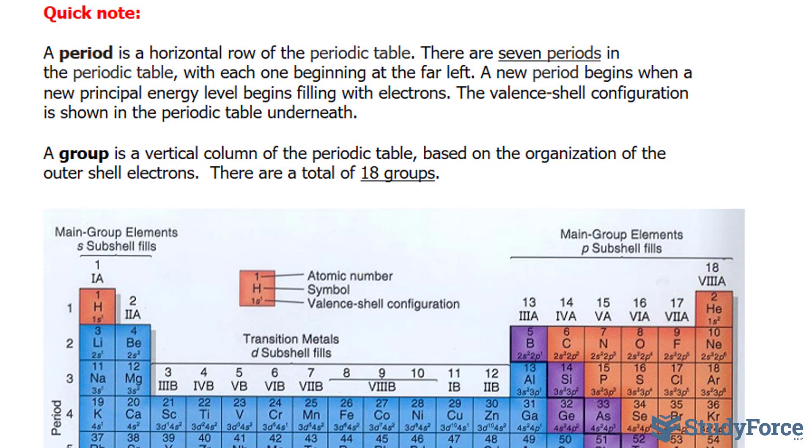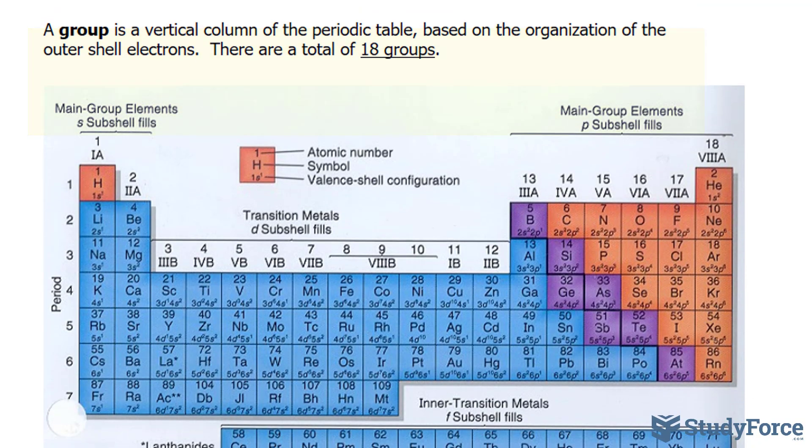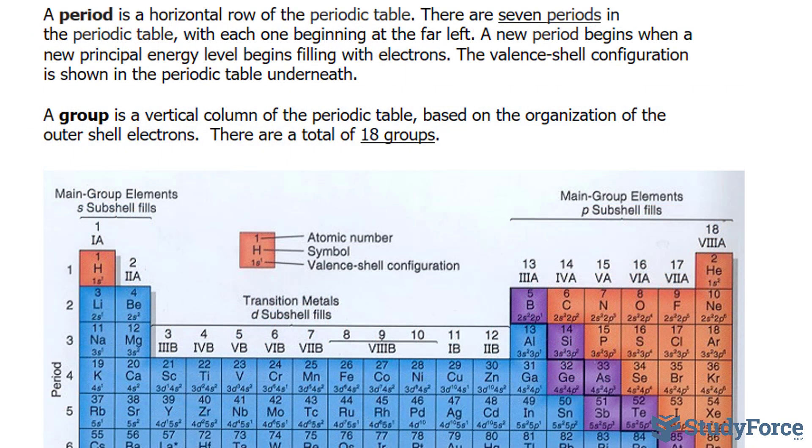It's important that we have an understanding of what period and group is. A period is a horizontal row of the periodic table. There are seven periods in the periodic table, as you can see, labeled 1 through 7. A new period begins when a new principal energy level starts filling up with electrons. The valence shell configuration is shown in the periodic table underneath.